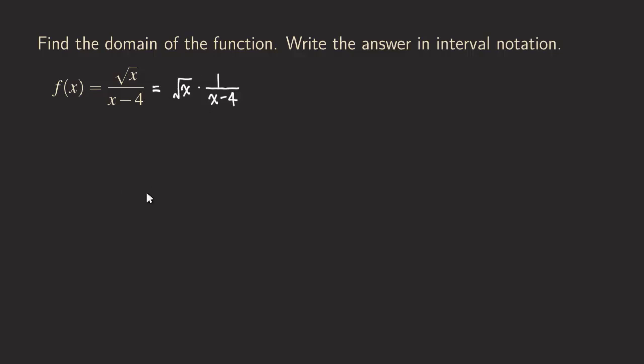So for the first function, for the square root of x, we are going to require the stuff inside the square root to be non-negative. Non-negative means that it can be either positive or zero. So we can set up an inequality, which is just x greater than or equal to zero. So that's the domain condition if we are finding the domain for the square root of x.